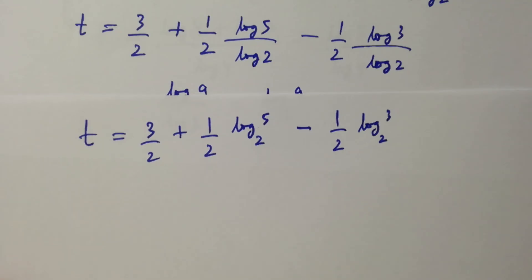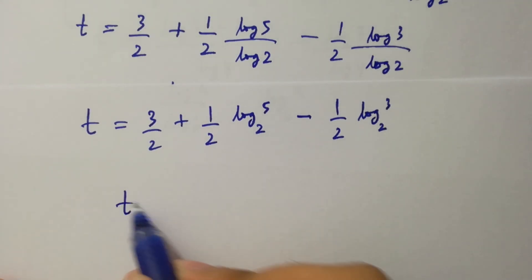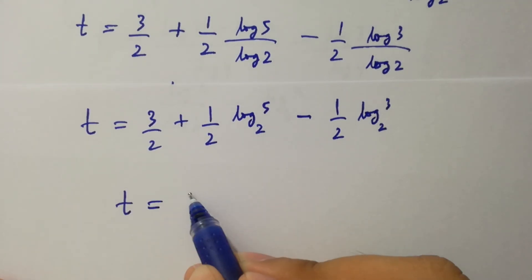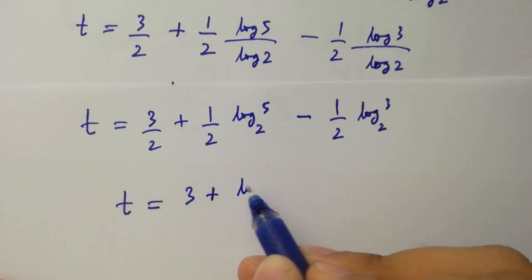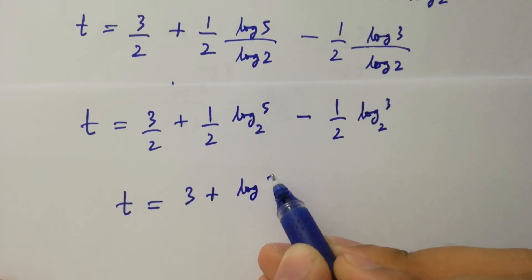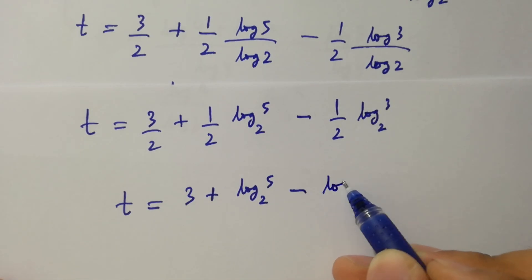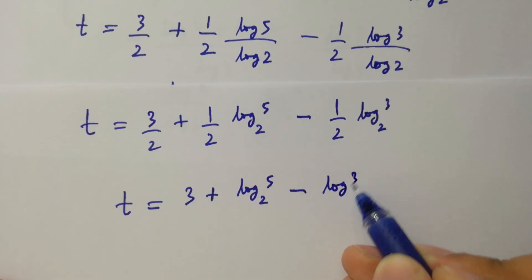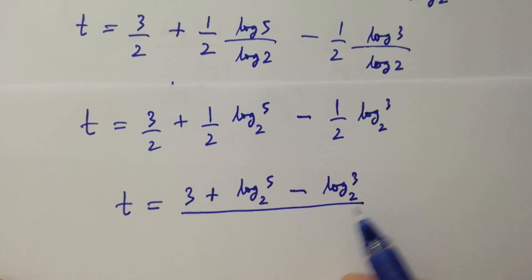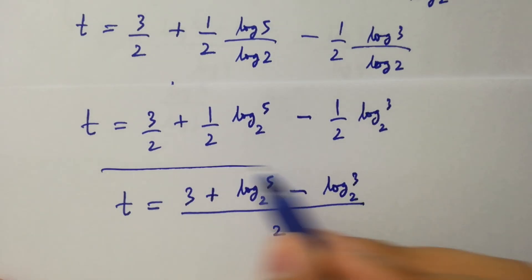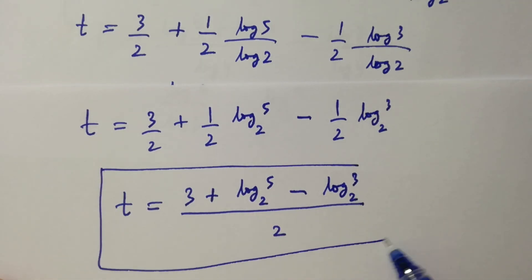So the value of T is equal to 3 plus log 5 to the base 2 minus log 3 to the base 2, all over 2. So we have the value of T.